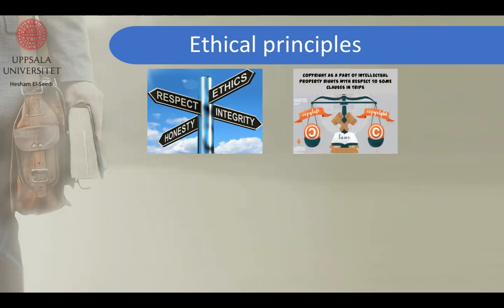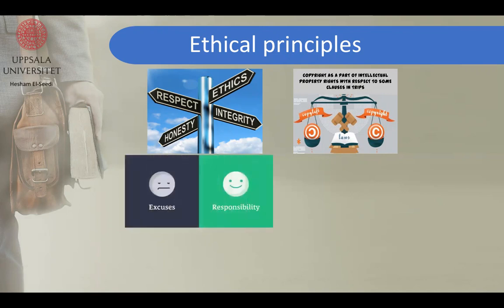What about ethics principles? Honesty and integrity are key. For example, copyright is very important as part of intellectual property rights. We must keep the copyright law. For instance, if we take a figure from any paper, we must obtain permission in advance; otherwise, you cannot take a figure from any paper — it will be misconduct. After taking permission, you should also refer to the reference. No excuses in such cases, and this is why we call it responsibility.